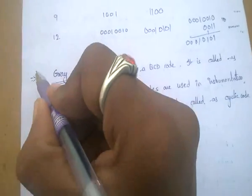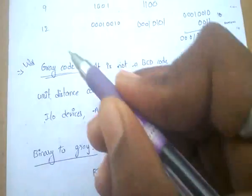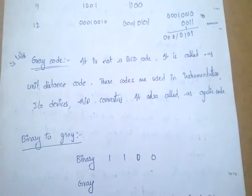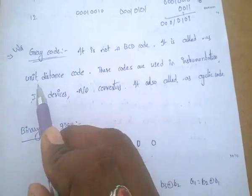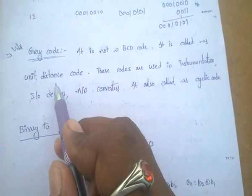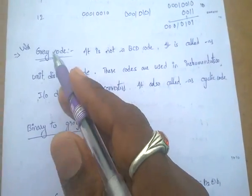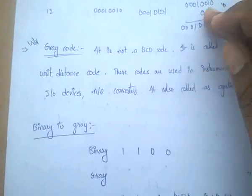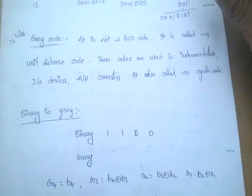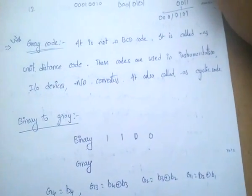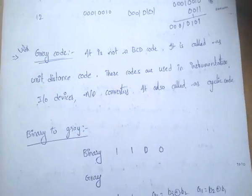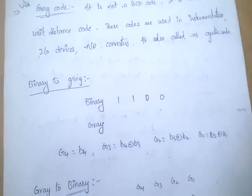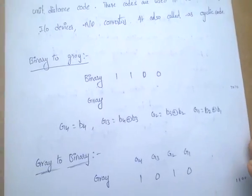Next, Gray code — it is very, very important. Gray code is not a BCD code. It is called as unit distance code. These codes are used in instrumentation purposes, input-output devices, and A-to-D converters — analog to digital converters. It is also called as cyclic code.